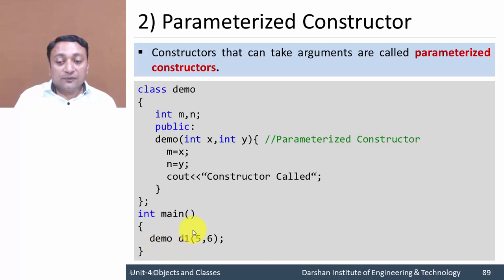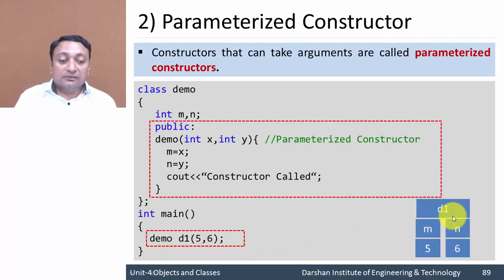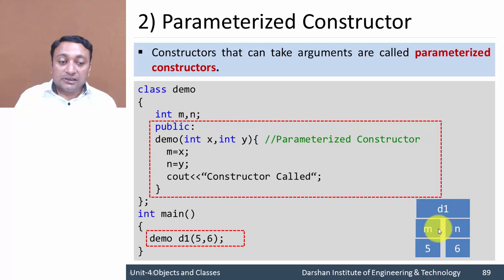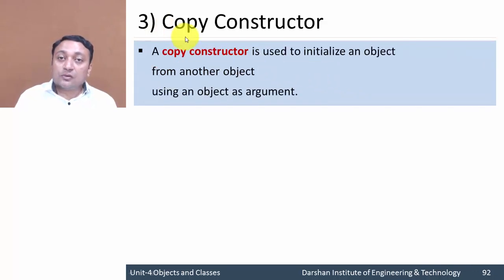To call the parameterized constructor, we write demo, then the object name, and pass arguments 5 and 6. So when you create this object, it will pass 5 and 6 to x and y, which will then be assigned to the data members of that object. So for object d1, the value of m will be 5 and the value of n will be 6.